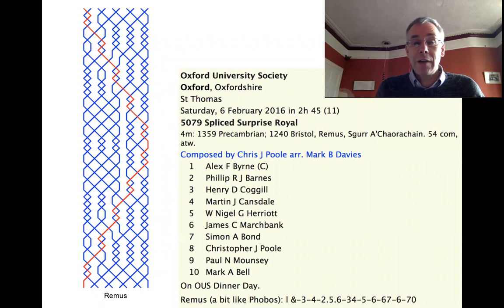There hasn't been a peal of it since by itself, as far as I can see. Interestingly, the seconds placed lead-end variation was named first way back in 1997. And if you look at the footnote down here from the first peal containing Remus, giving the place notation as a new method, it says Remus, a bit like Phobos. And I think that's one of the reasons why it looks so attractive as a surprise royal method.